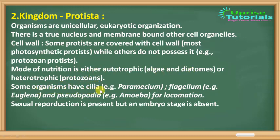Some organisms have cilia — hair-like structures — or flagella, as seen in Euglena, which are used for locomotion (movement). Others use pseudopodia, which are false feet used for movement and feeding. Sexual reproduction is present, but an embryo stage is absent — meaning sexual reproduction occurs but the embryo stage is not developed.